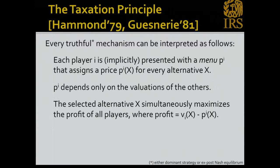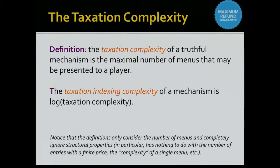For the second notion we need to recall the taxation principle, which says that every truthful mechanism can be interpreted in the following way. Think about some player i — the taxation principle says that player i is implicitly presented with some menu p_i, which is a function that assigns a price to every possible bundle. This function p_i depends only on the valuations of all players but player i. The magic in a truthful mechanism is that the selected alternative x simultaneously maximizes the profit of all players.